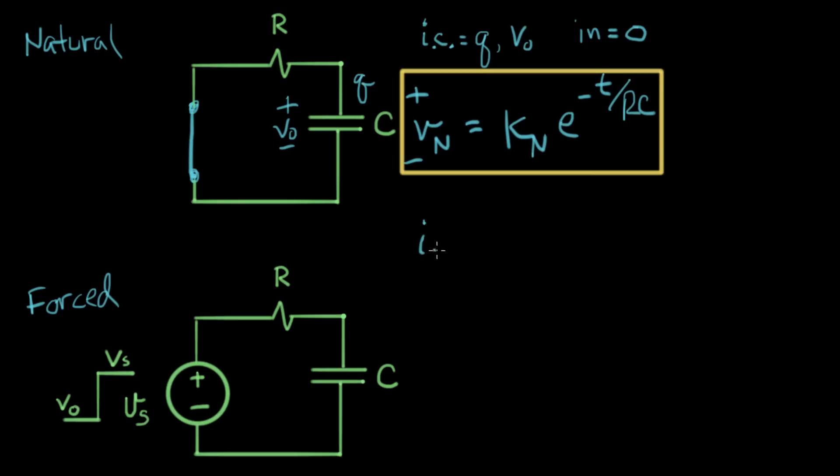And for the forced response, we remember the initial conditions are set to zero. So, that means the Q equals zero here. And that means that the initial V is zero. I'll just write in zero. So, that's what it means to set the initial conditions to zero. And the inputs are equal to, we use the inputs this time, the input is equal to VS.